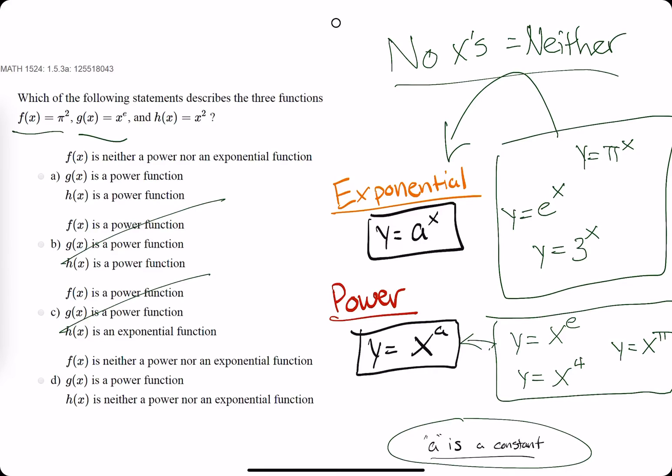So then g is x to the e. So we have x as the base and a number e as the exponent. When x is the base, we have our power function. So g should be a power function, which a and d both say.